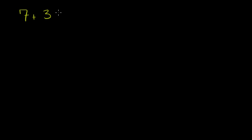So let's say I have the mathematical statement 7 plus 3 times 5. Now, if we didn't all agree on order of operations, there would be two ways of interpreting this statement.